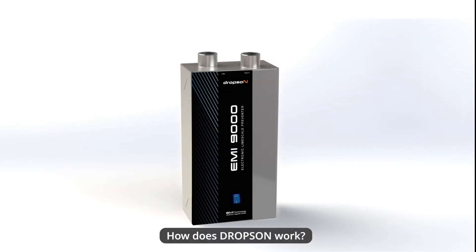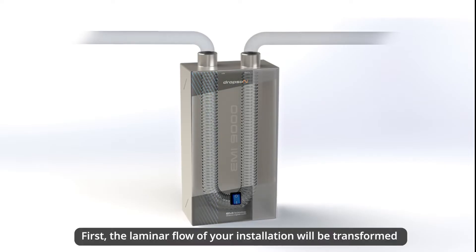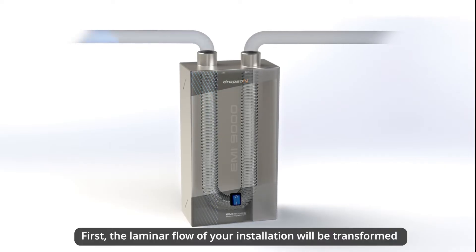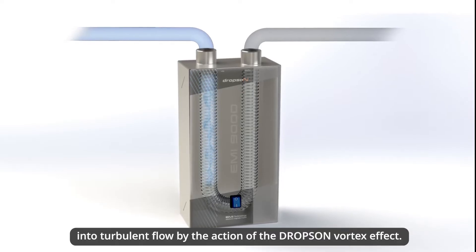How does Dropson work? First, the laminar flow of your installation is transformed into turbulent flow by the action of the Dropson vortex effect.